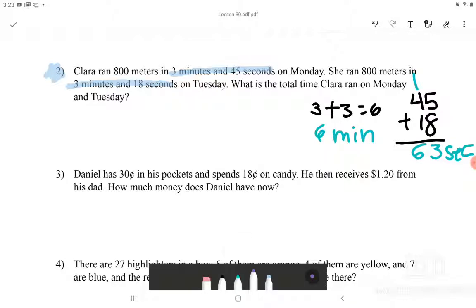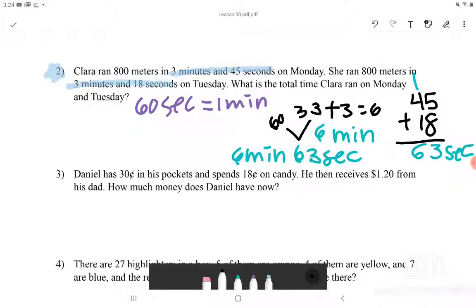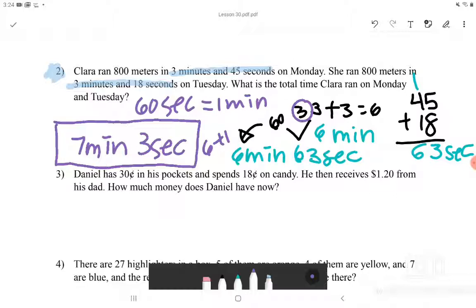Here we have to know one thing, that 60 seconds is equal to 1 minute. Now what we have so far is that she ran 6 minutes and 63 seconds. But because 60 seconds could be written as 1 minute, and this 63 second is adding 60 and 3, we would give it, give a minute to 6 minutes. So 6 minutes will turn 7 minutes. Because it is the same as doing 6 plus 1. And left over, which is 3, will just become 3 seconds. So on Monday and Tuesday combined, Clara ran 7 minutes and 3 seconds.